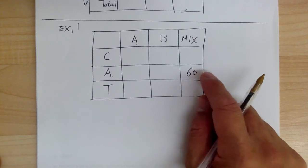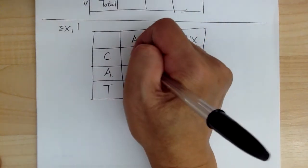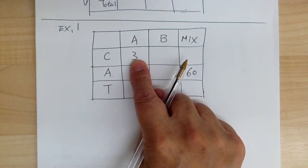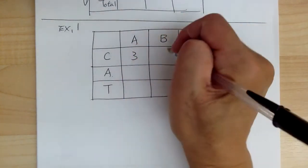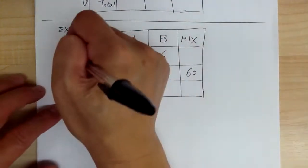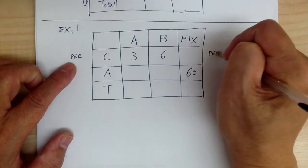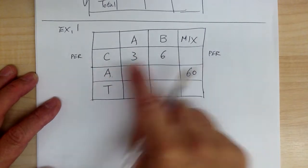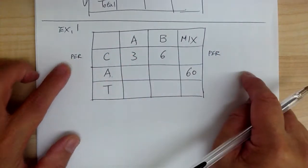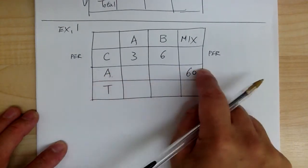Continuing to read: brand A costs $3, so 3 goes in the C row for brand A. Brand B costs $6 per pound, so 6 goes in the C row for brand B. Whenever you see the word 'per,' that value goes in the cost row — price per pound goes in this row. Amount, like how many pounds or ounces, goes in the A row.